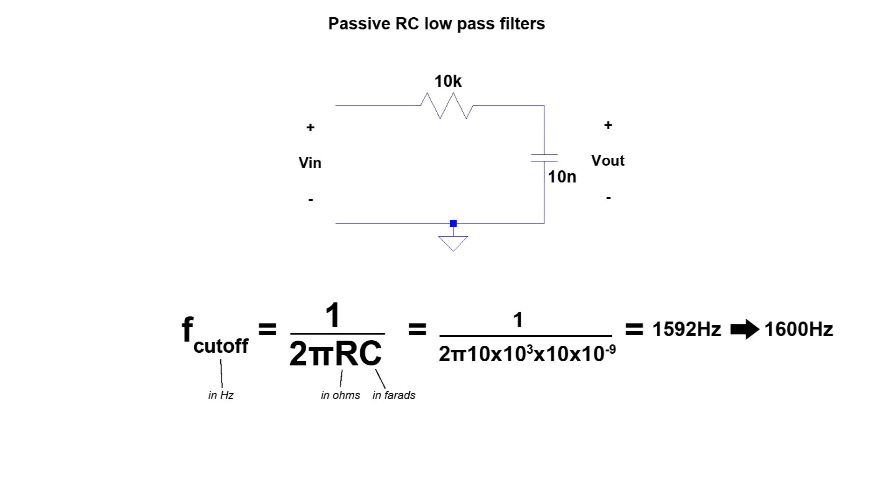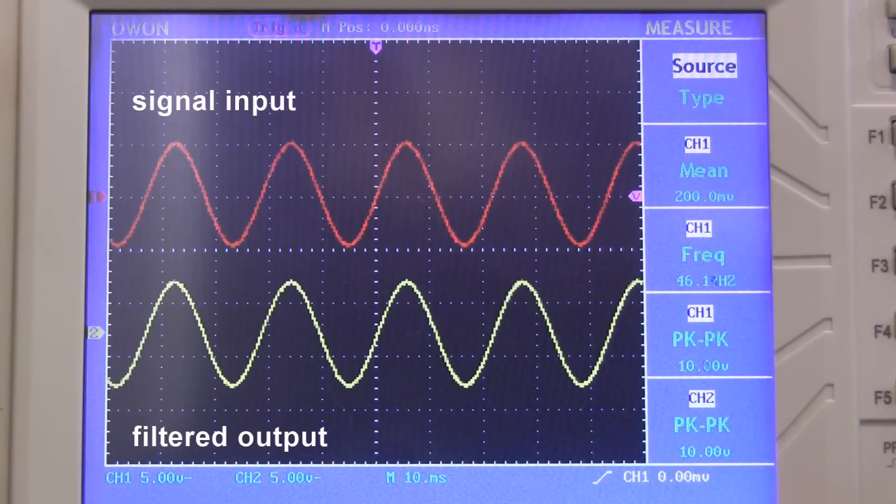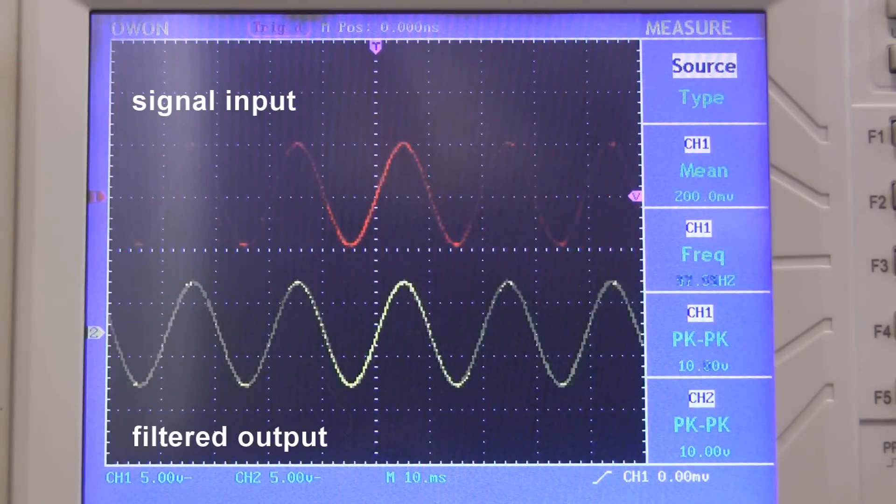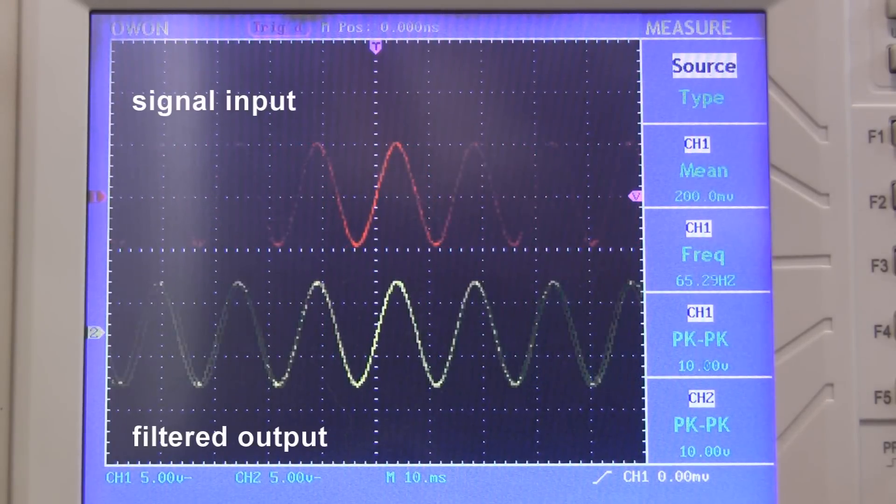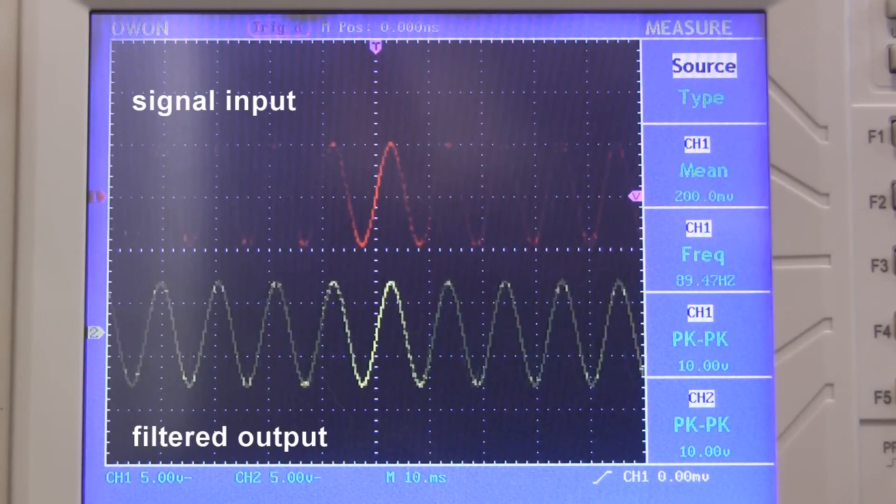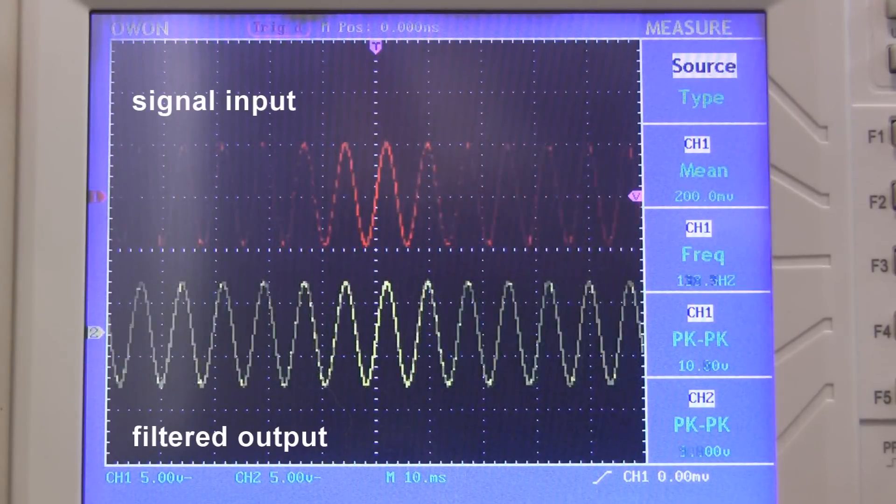Okay, so this low-pass filter has a cutoff frequency of 1600 Hz, but what does that mean? This means that at frequencies below 1600 Hz, the signal passes through unchanged. If I feed in sine waves of different frequencies, you can see that from 45 to 200 Hz, the output is the same as the input, 10 volts peak to peak.